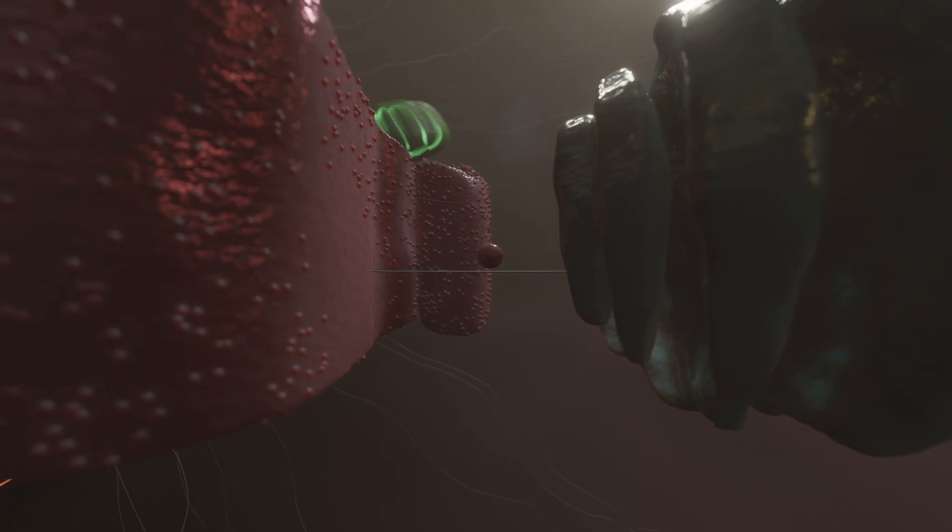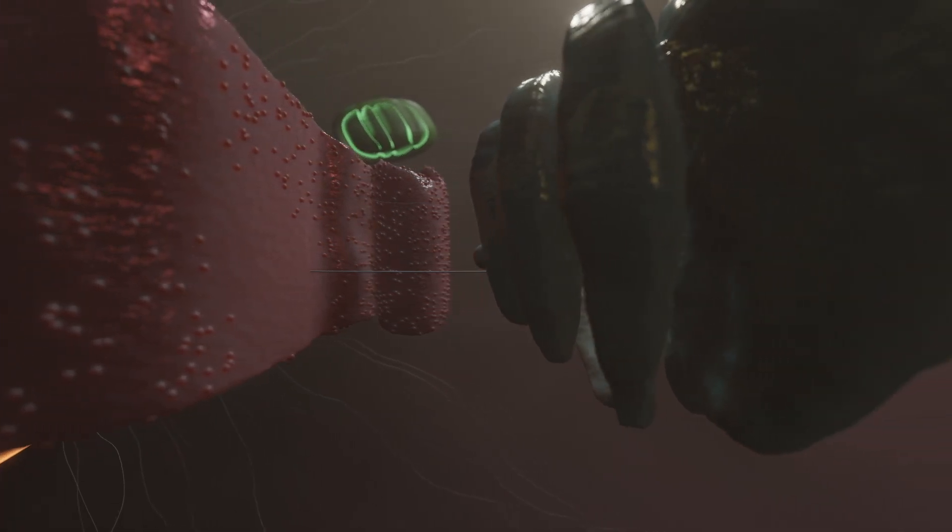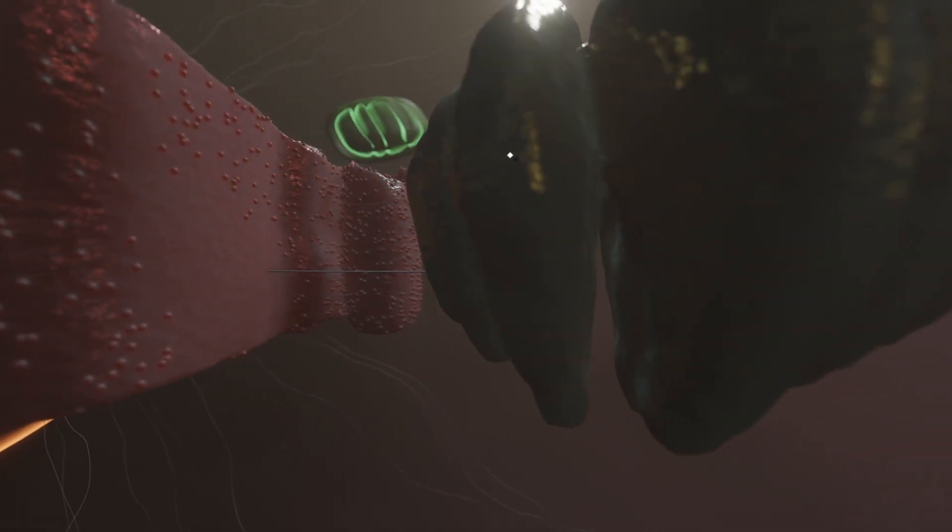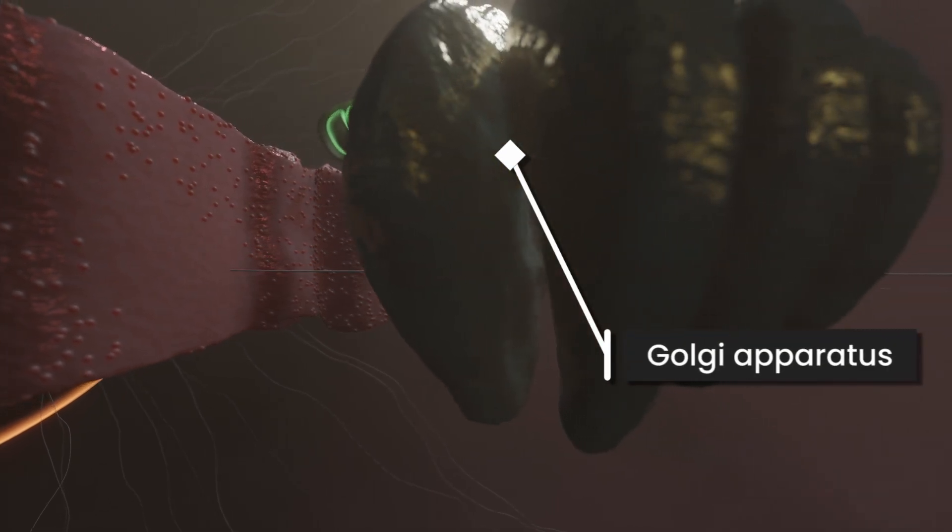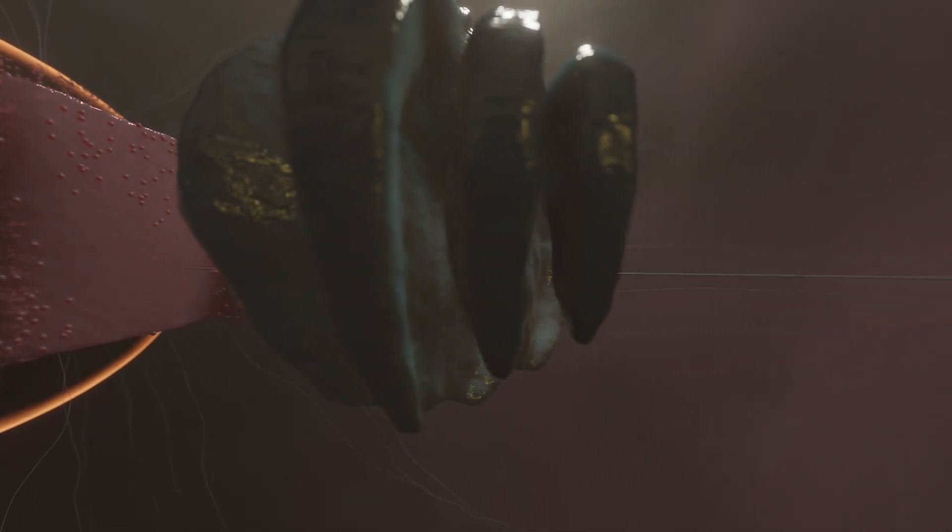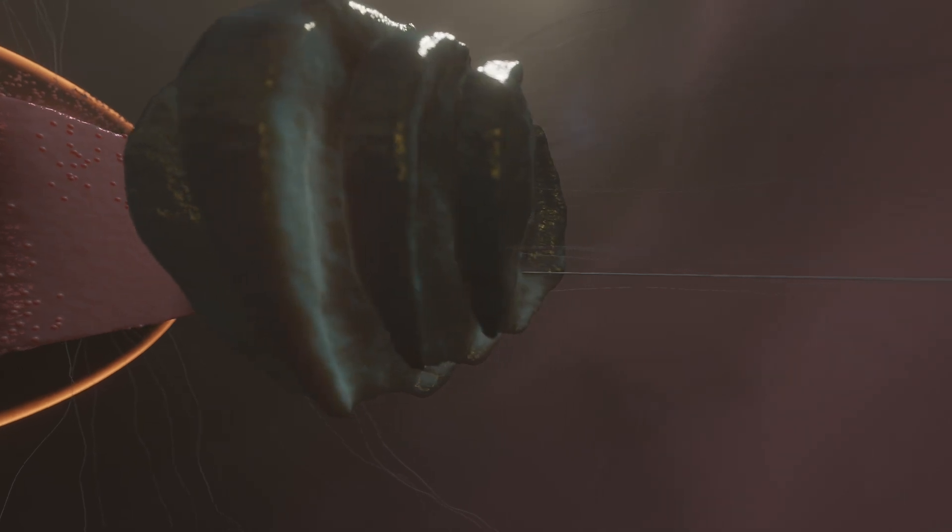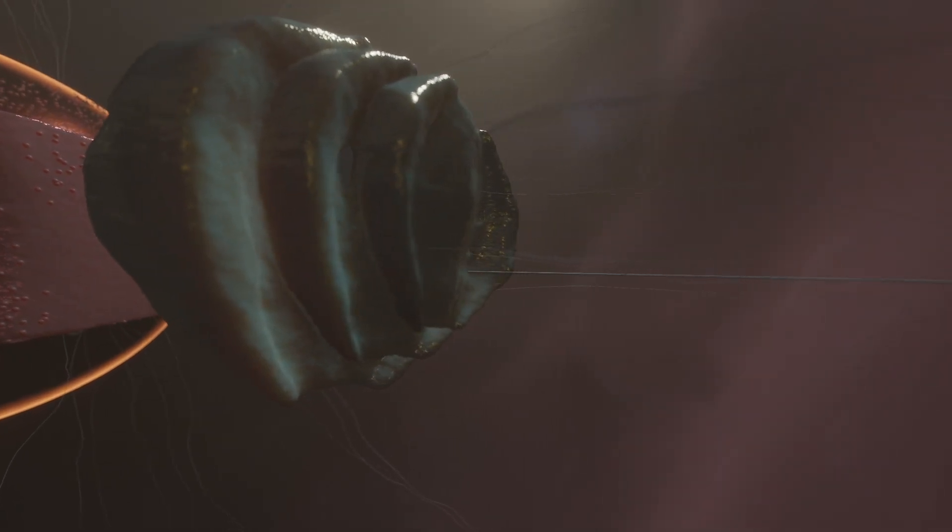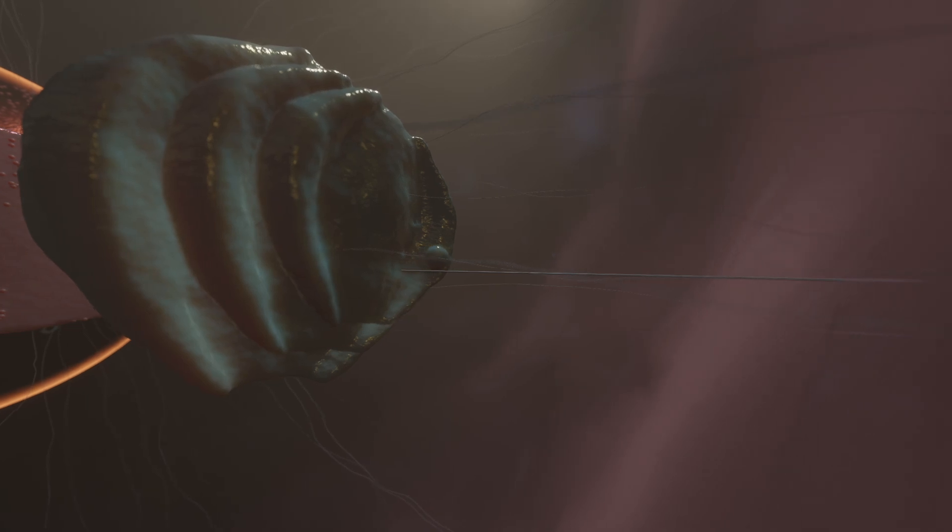Some of the proteins require modification and therefore migrate to another cell organelle. The incoming vesicles fuse with the membrane of the organelle and their contents enter its interior. Here, the proteins undergo chemical modifications, such as the attachment of a sugar molecule. On the other side, the modified proteins are repackaged into vesicles and sent to their destination.